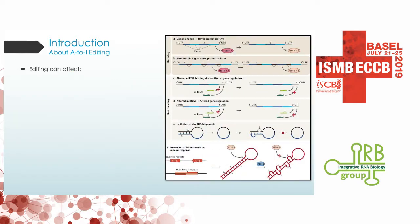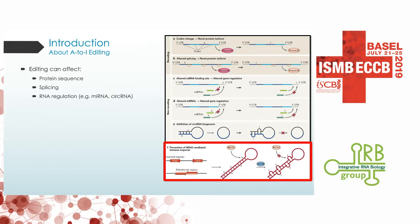Editing changes the sequence of the RNA, so obviously it can affect the sequence of the protein either by changing the codon or by cancelling the stop codon. It can affect splicing if it happens at splicing consensus elements. It can also affect regulation by the editing of microRNAs, for example, both the seeds and the targets. The editing can prevent the creation of circular RNAs, but the foremost function of editing in the cell is actually to prevent the activation of the cellular innate immune system by endogenous double-stranded RNAs. The cellular innate immune system we're talking about is the MDA5-MAVS pathway, and by editing, ADAR actually inactivates this sensory pathway.